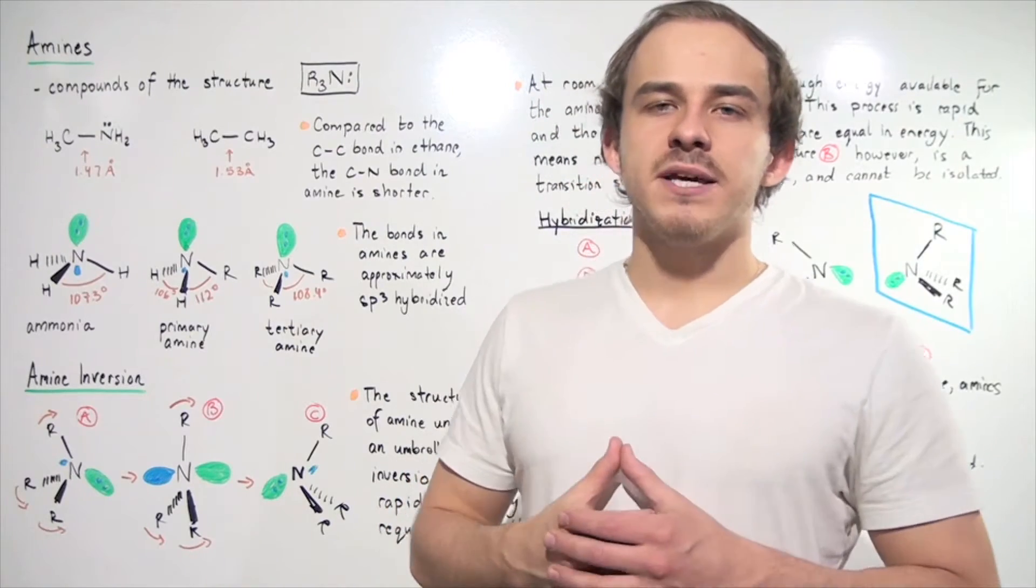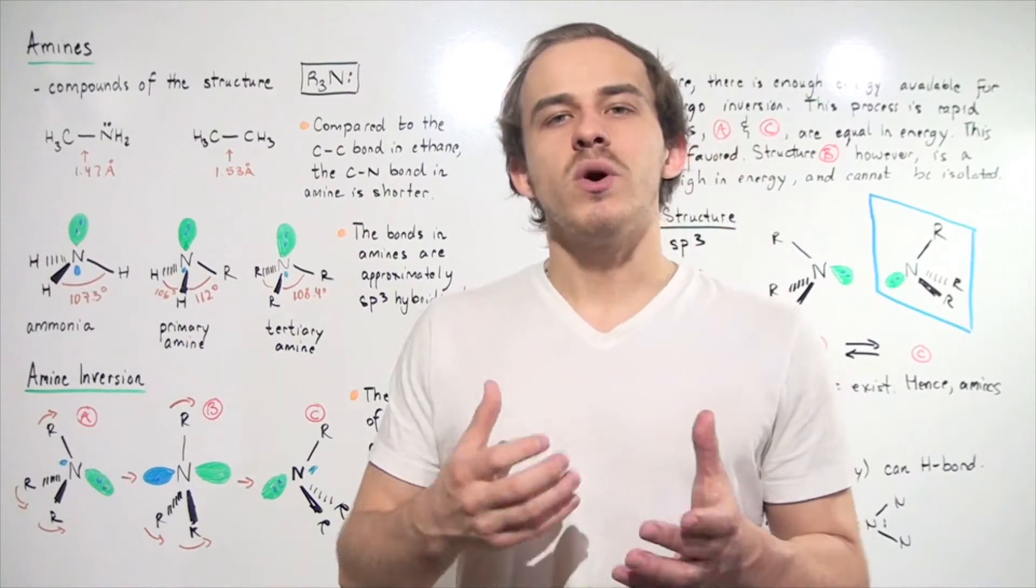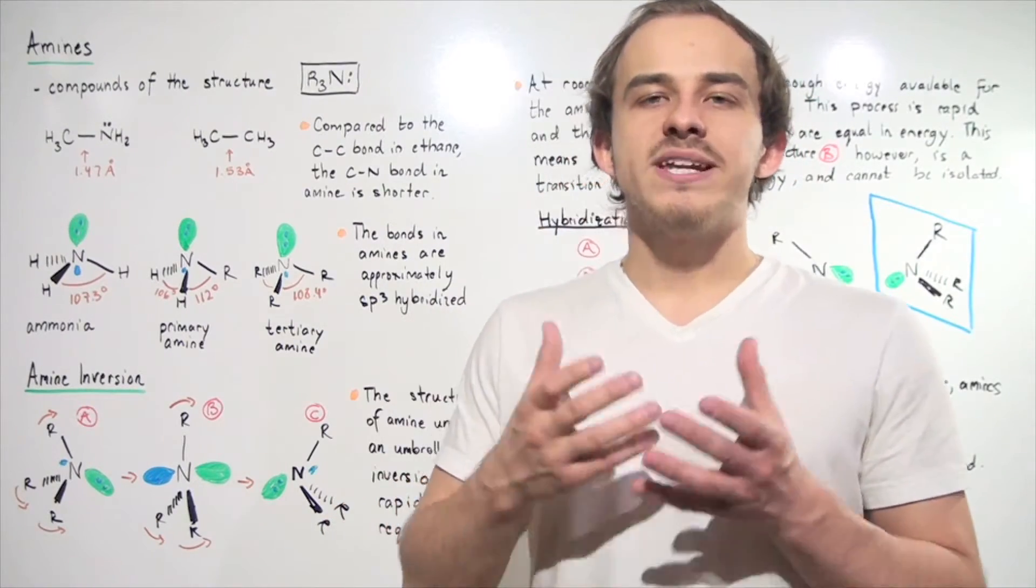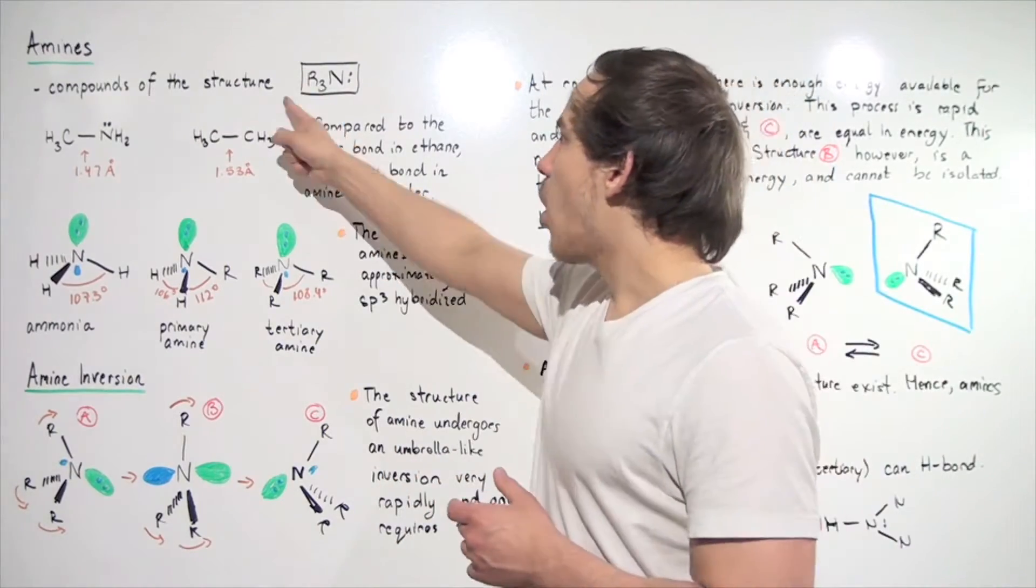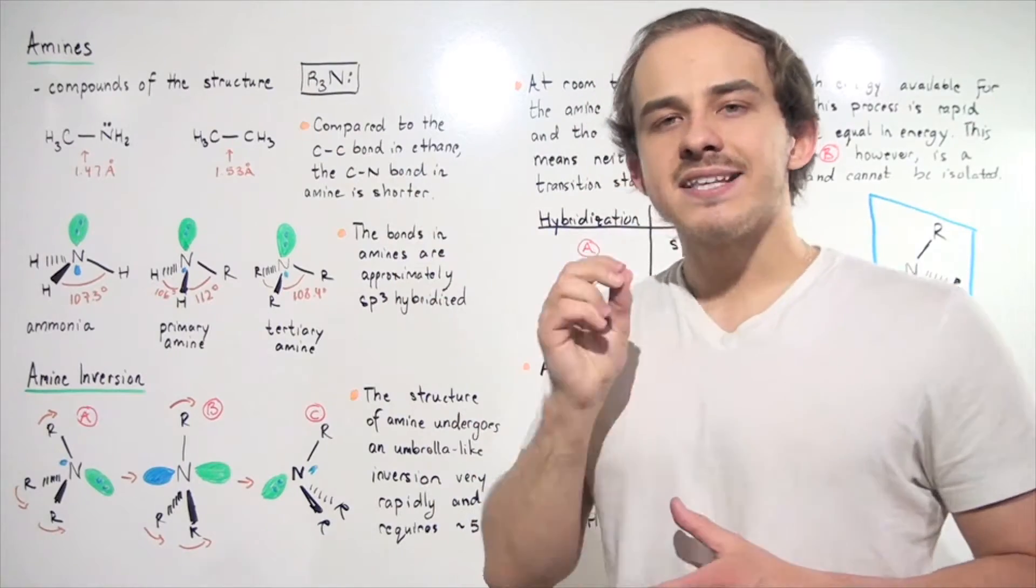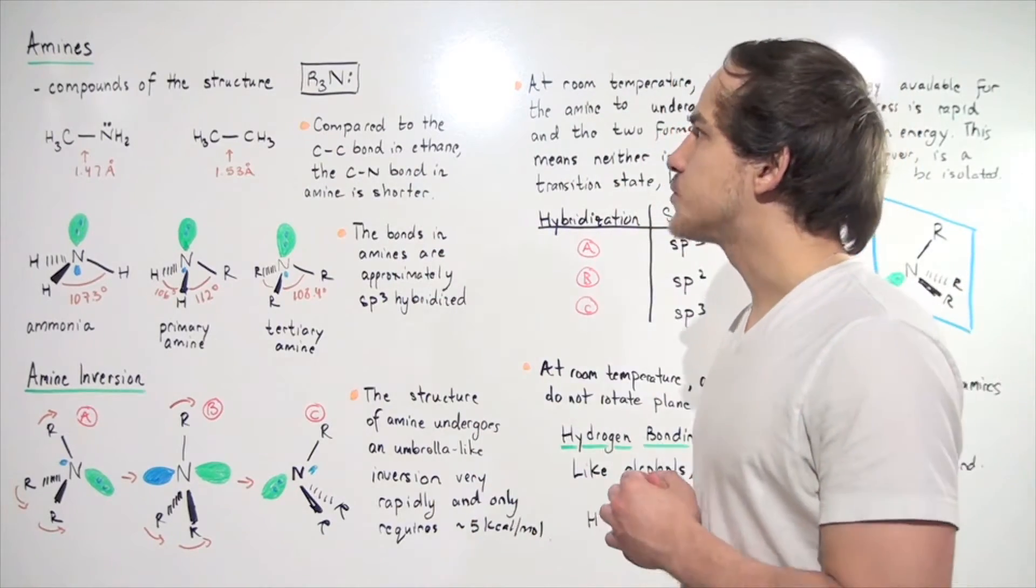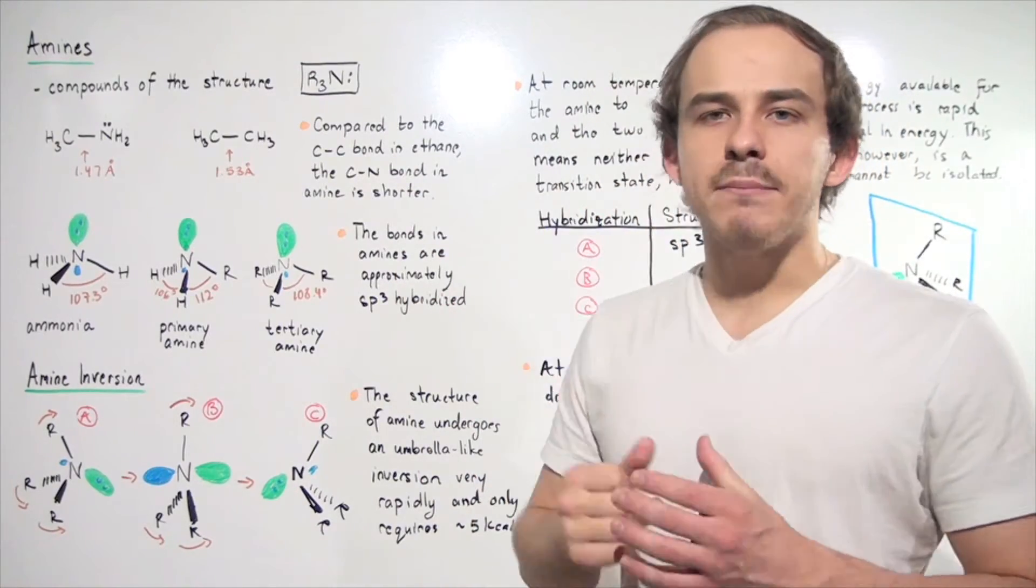In this lecture, we're going to begin our discussion on amines. So what exactly is an amine? Well, an amine is a compound that has the following molecular formula: R3N, and the N has a pair of non-bonding electrons. Now, four different types of amines exist.